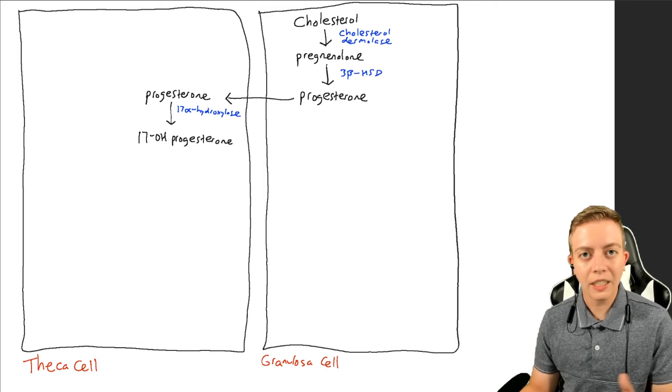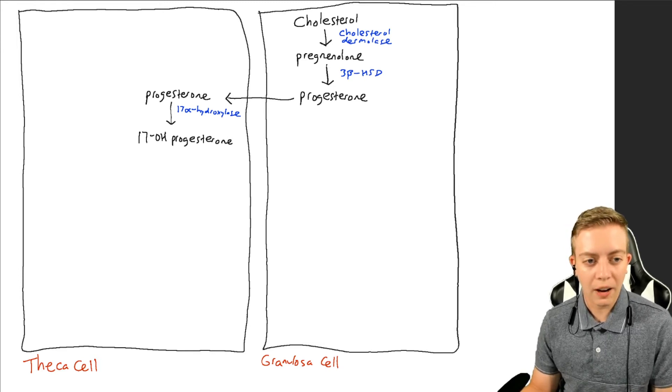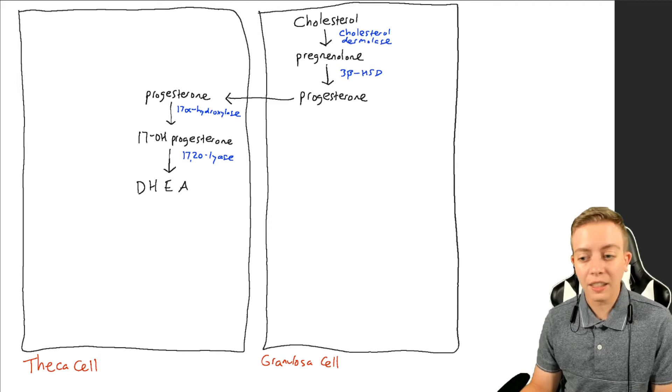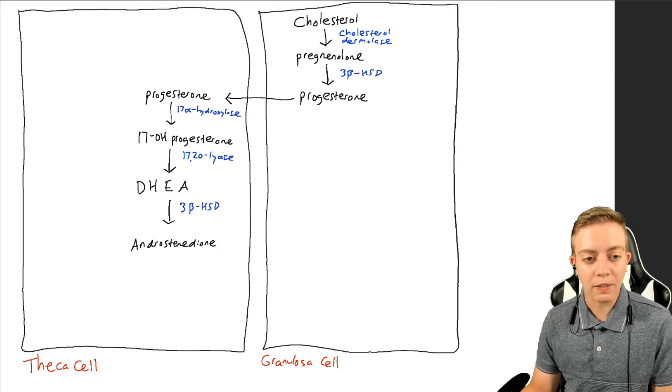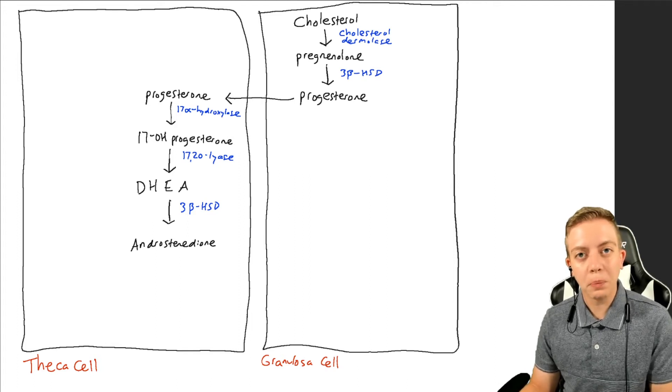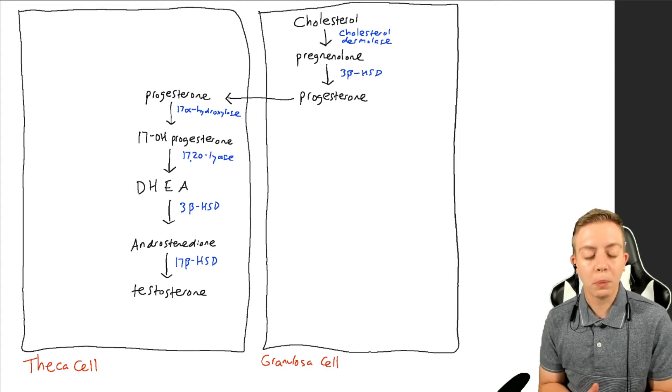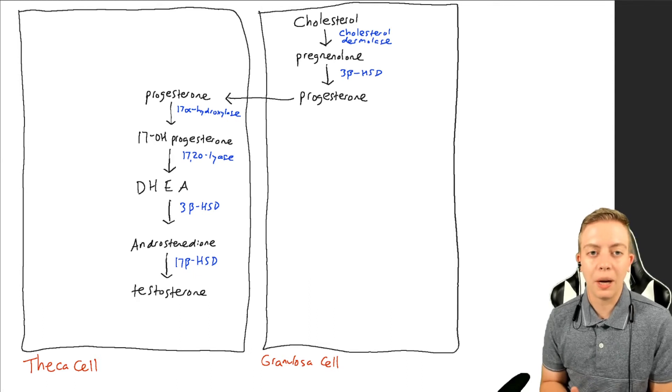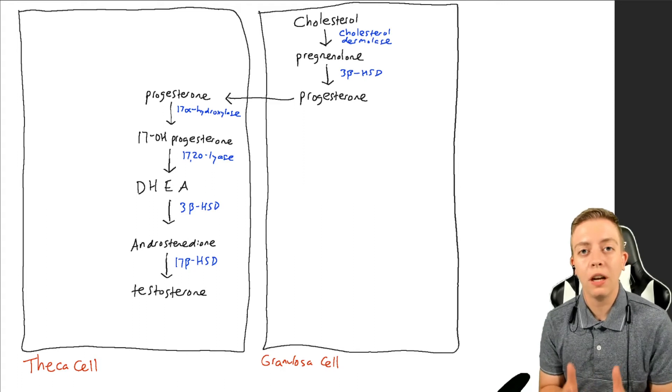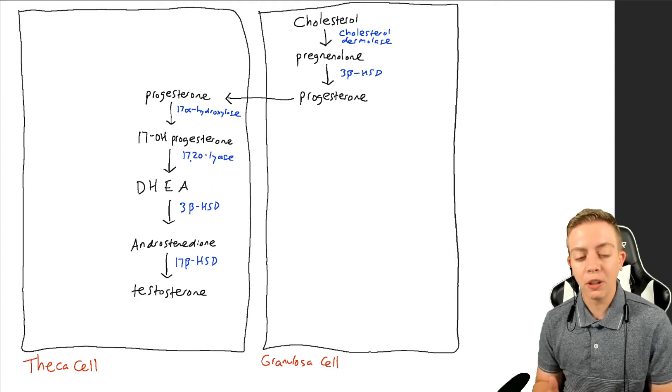And then we're going to continue this pathway the same as we would to make androgens in the theca cell, where we have 17-hydroxyprogesterone to DHEA via 17,20-lyase. Then DHEA is going to be converted by 3-beta-HSD to androstenedione. Androstenedione might be converted to testosterone here, just like we saw previously. If we want to produce testosterone, we can produce it with 17-beta-HSD. But also, androstenedione and testosterone are both substrates that can be used to make estrogens, and so either one of them, both of them, can float